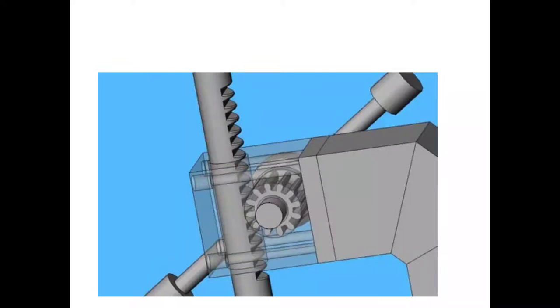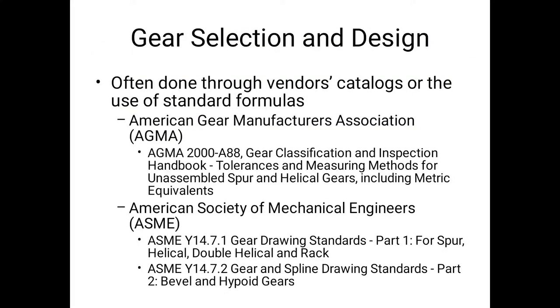Another example: common gear materials used to manufacture gears are cast iron, steel, brass, bronze alloys, and plastics. Gear selection and design: often done through vendor catalogs or use of standard formulas. American Gear Manufacturers Association (AGMA) 2000-A88: gear classification, inspection handbook, tolerances and measuring methods for unassembled spur and helical gears including metric equivalent. American Society of Mechanical Engineers (ASME) gear drawing standards for spur, helical, double helical, rack gears, spline drawing standards, bevel, and hypoid gears.